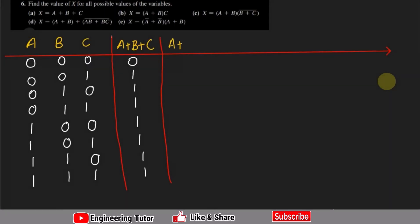Question B is (a plus b) multiplied by c. For the first combination, all are zero so the output is 0. For a=0, b=0, c=0: 0 plus 0 is 0, multiplied by 0 is 0. For a=0, b=0, c=1: 0 plus 0 is 0, multiplied by 1 is still 0. For a=0, b=1, c=0: a+b gives 1, multiplied by c=0 gives 0.